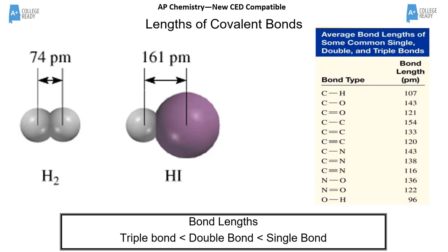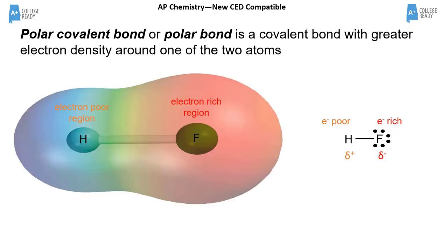To demonstrate this for students: take a heavy weight with a hook, put a rubber band around a pencil or rod, and hang the weight by one rubber band — measure that distance. Then use two rubber bands, then three. With three rubber bands, the distance between the stick and the weight is shorter than with just a single rubber band, illustrating how triple bonds are shorter.